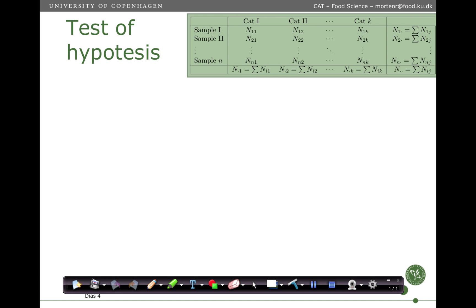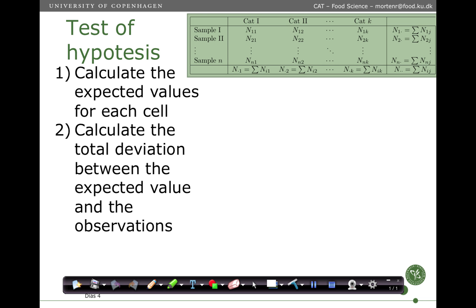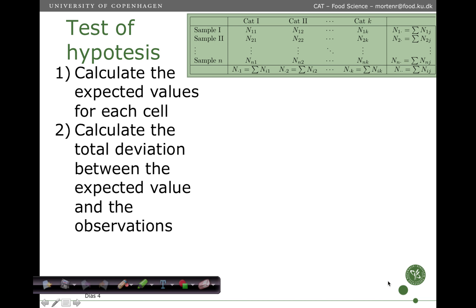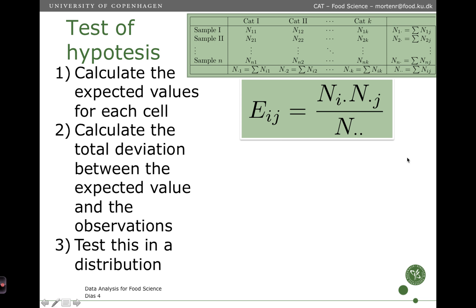In order to test a hypothesis, the nuts and bolts of that is to first calculate the expected values of each cell, calculate the total deviance between the expected values and the observations, and then test this in a distribution. In order to calculate the expected value for each cell — and this is under independence, so the assumption is that there is no dependency between the sample and the category — we take the row sum.